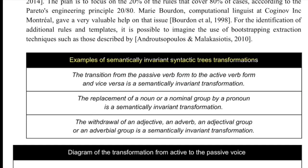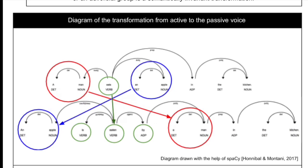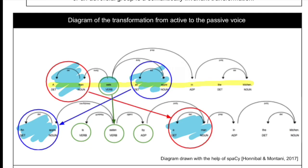Transformation rules can include changing a passive verb to active, replacing a noun or nominal group by a pronoun, or removing an adjective or adverb. For example, in the active-to-passive transformation, 'A man eats an apple in the kitchen' becomes 'An apple is eaten by a man in the kitchen' — the positions of subject and object are swapped and the verb is expanded to give it a passive flow. These are the kinds of transformations one can do using syntax dependency trees.